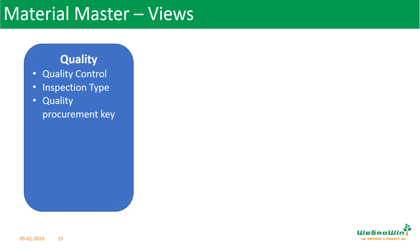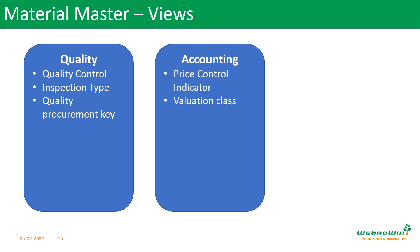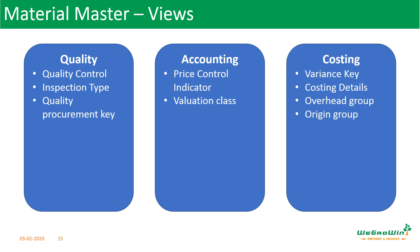The quality management view provides the option to select different inspection types — there may be different types of inspections for finished goods, raw materials, or work-in-process, each with different frequencies and parameters. The quality procurement key indicates that raw material must be procured as quality-managed, and the relevant certification type can be managed. In the accounting view, we maintain the price control indicator — whether it is standard price or moving average price — and the valuation class. In the costing view, we maintain the variance key, costing details such as material cost and overheads cost, and the origin group where the cost originated.